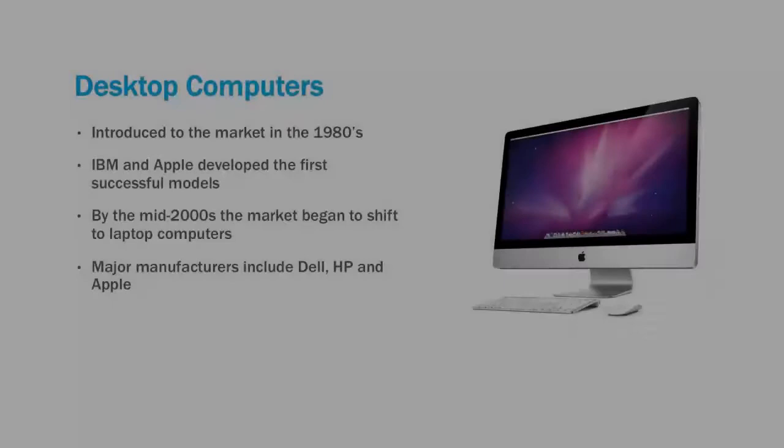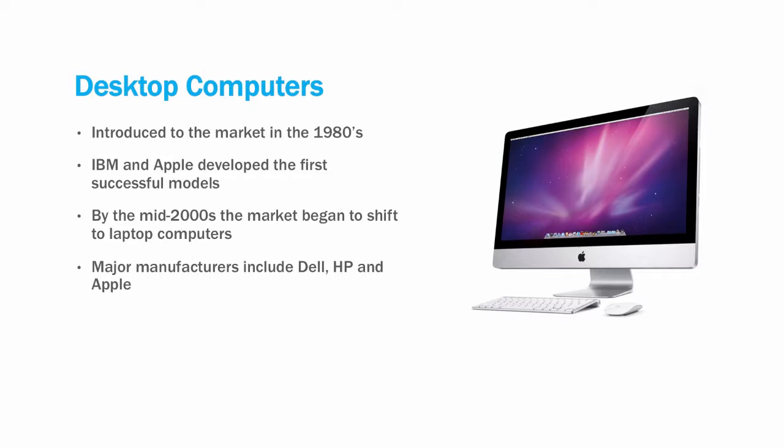The first computer type on the list is the desktop computer. These computers were introduced in the 1980s and have been the mainstay of the market since that time. Businesses still use these devices heavily for routine computing and office automation. Home users still use these devices as well, but the market began to shift to laptop computers in the mid-2000s. The sales of desktop computers have steadily fallen year after year since that time. Major manufacturers of these devices include Dell, HP, and Apple.